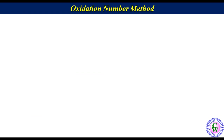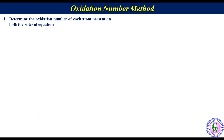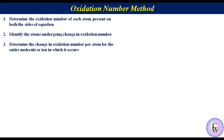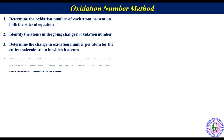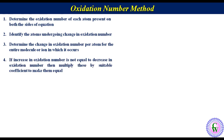These are the steps we follow. First, determine the oxidation number of each atom present on both sides of the equation. Second, identify the atoms undergoing change in oxidation number and determine the change in oxidation number per atom for the entire molecule or ion in which it occurs. Third, if the increase in oxidation number is not equal to the decrease, multiply by suitable coefficients to make them equal.